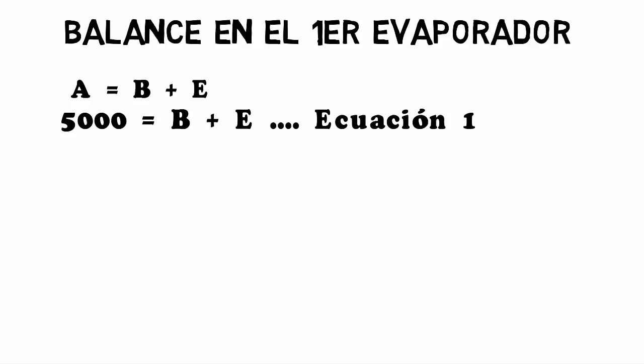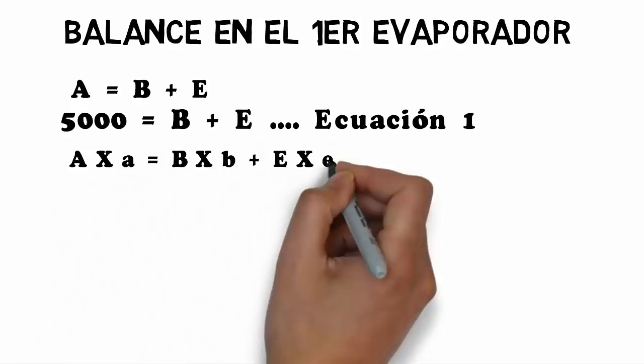Subsequently, a solids balance is performed on the first evaporator, where the flow rate is multiplied by its solids fraction. The resulting equation is: A·XA equals B·XB plus E·XE.